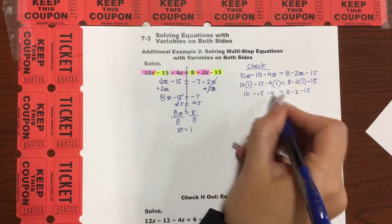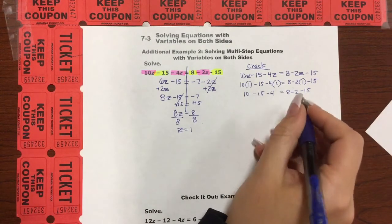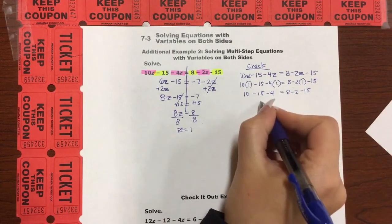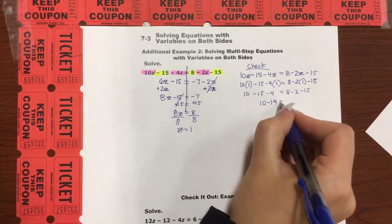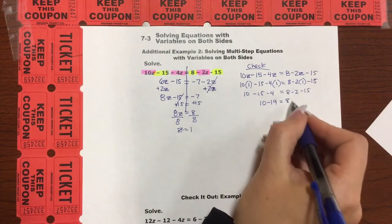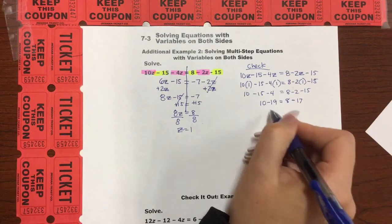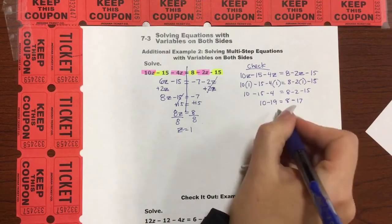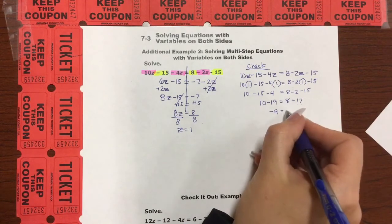All right, I'm just going to combine these things that are negative. So negative 15 and negative 4. What is that? Negative 19. So I'm going to write 10 minus 19. That's what that equals. Equals, I'm going to do the same thing here. 8 and negative 2 and negative 15 would be negative 17. Okay. And 10 minus 19 would be a negative 9. And 8 minus 17 is also a negative 9.